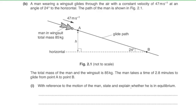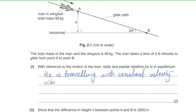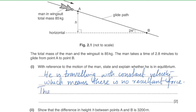Part one: is the man in equilibrium? When an object moves with constant velocity, there is no resultant force acting on it — that is Newton's first law — and the object is in equilibrium. This man is traveling with constant velocity of 47 m/s, meaning there is no resultant force, so he is in equilibrium.